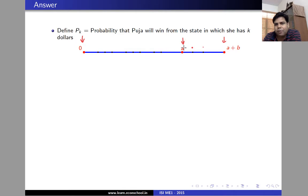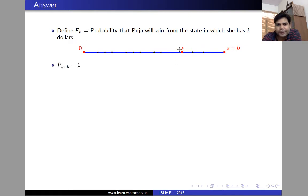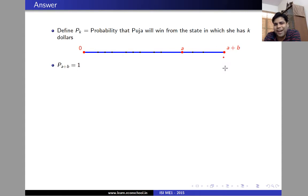In every round when we toss a coin, either we move to a state ahead of A or to a state before A. If Pooja wins the first round she moves from A to A plus one dollars, and if she loses she moves from A to A minus one dollars. Clearly if Pooja is in state A plus B she already has all of Priya's money, so the probability that she wins all of Priya's money from state A plus B is one.